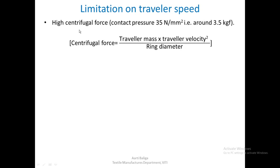The traveler running on the ring surface at very high speed has a lot of centrifugal force trying to push it out. This force can be around 35 Newtons per mm², amounting to around 3.5 kilogram-force — quite high, equivalent to 3.5 kilograms rotating at 25,000 rpm around the spindle. Centrifugal force is calculated as: traveler mass × traveler velocity² ÷ ring diameter.